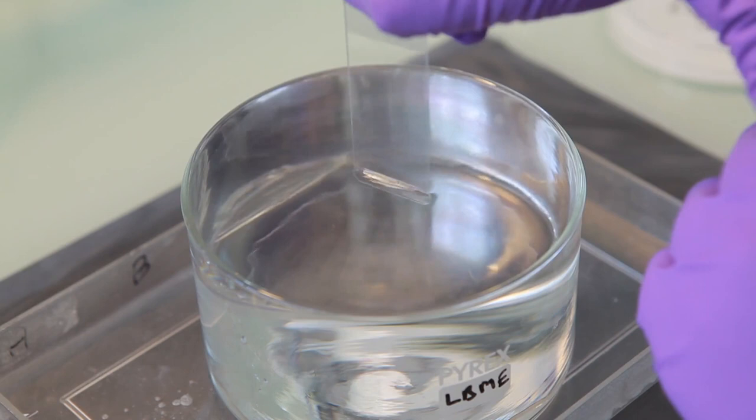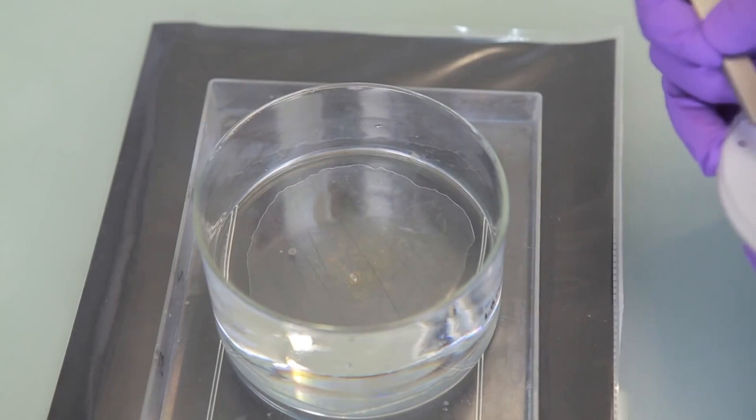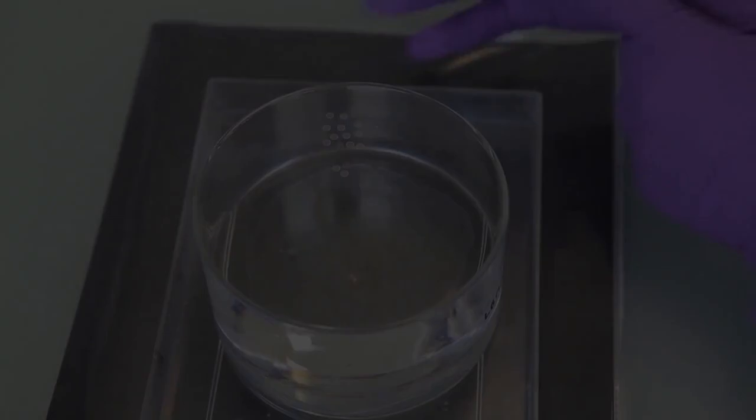Dip the slide into a beaker filled with distilled water so that the formular film floats off onto the water surface. Carefully place acetone clean grids on the film's shiny face up with a 12mm diameter cover slip on top of some of them. They will be used for the thickness assessment experiment.